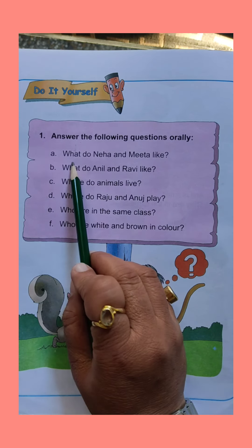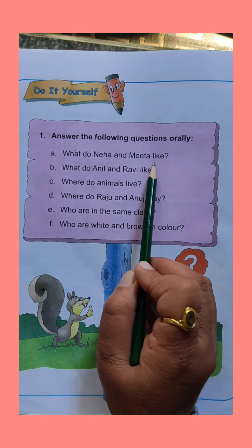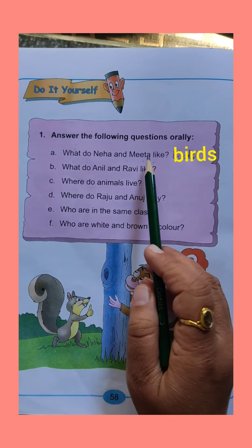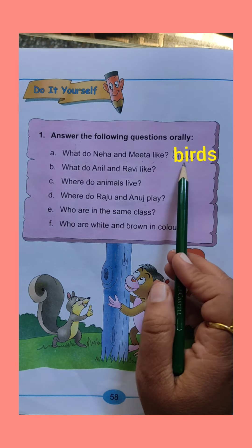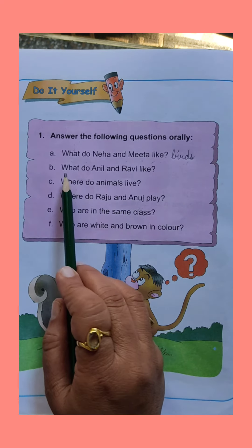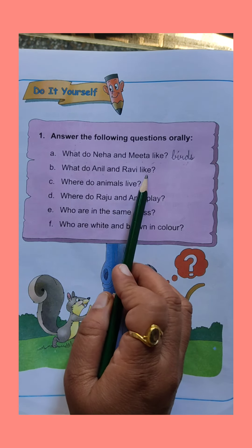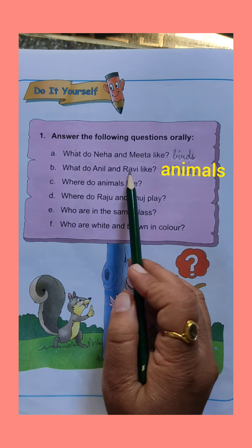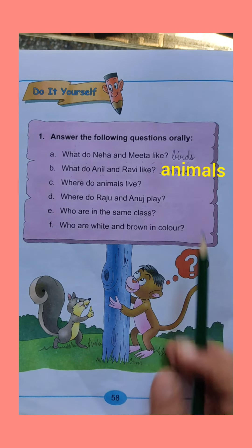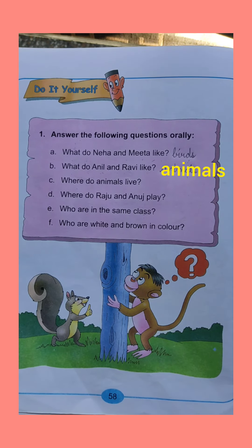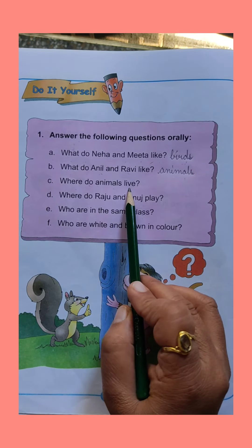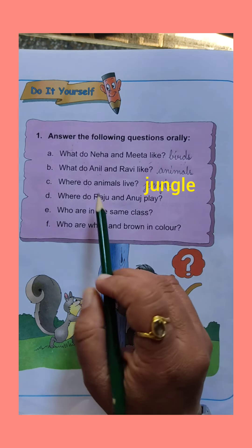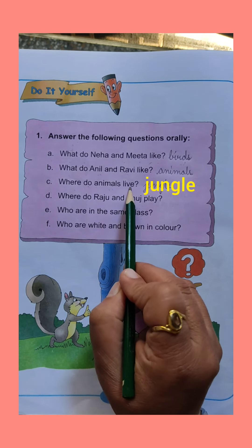Question A: What do Neha and Meeta like? Neha aur Meeta ko kia pasand hai? Neha and Meeta like birds. So you will write 'birds.' B part: What do Anil and Ravi like? Anil aur Ravi ko kia pasand hai? Anil and Ravi like animals. C part: Where do animals live? Animals live in a jungle. So you will write 'jungle.'